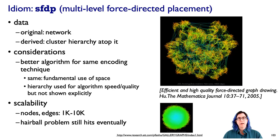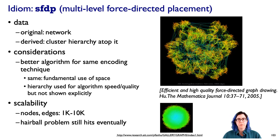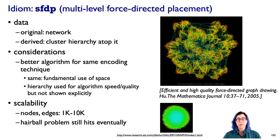Graph drawing is an area with quite a lot of algorithmic work — note that 'graph drawing' and 'network' are synonyms used across different fields. Traditional force-directed placement can do well with small graphs, but beyond a few hundred nodes it often gets brittle, stuck in local minima, and unable to achieve good results, prompting a lot of work on scaling it up.